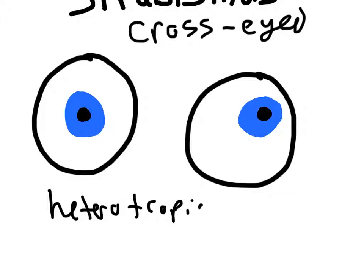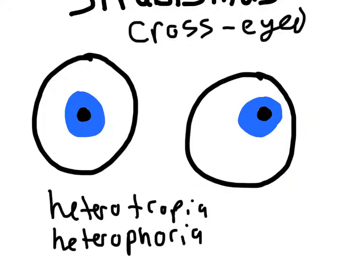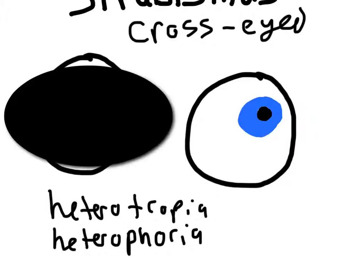Heterotropia — if it's manifest, it's heterotropia; if it's latent, it's called heterophoria. Basically, if the eyes are always not looking at the same angle, then it's heterotropia. However, if you cover one eye and that causes the cross-eyed condition — the strabismus — then that's known as heterophoria.